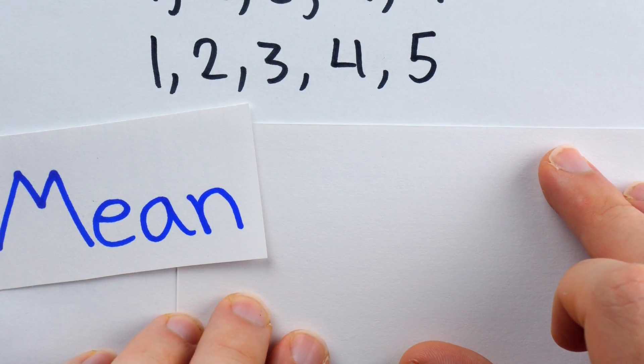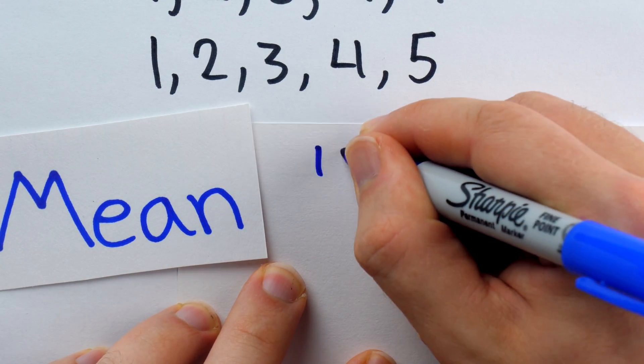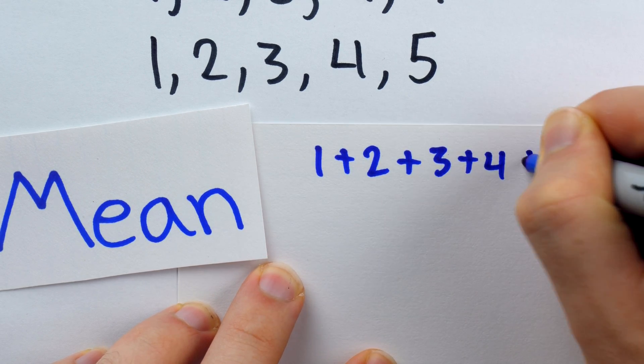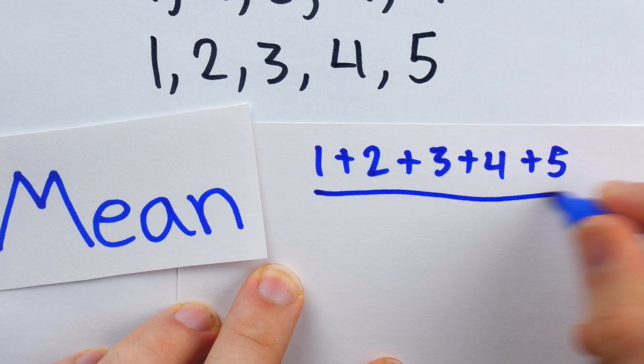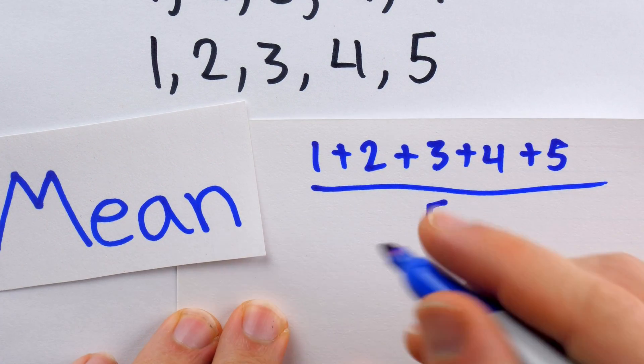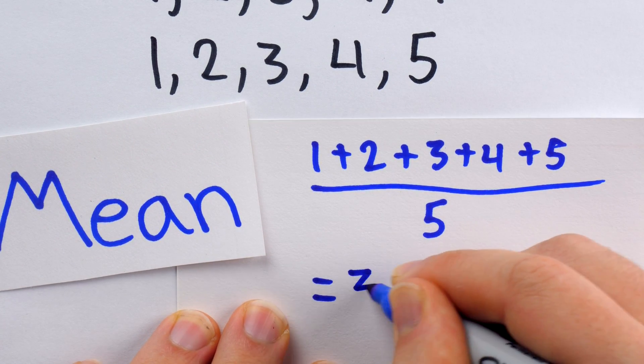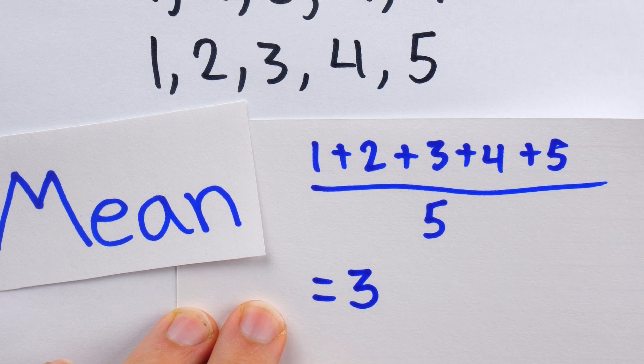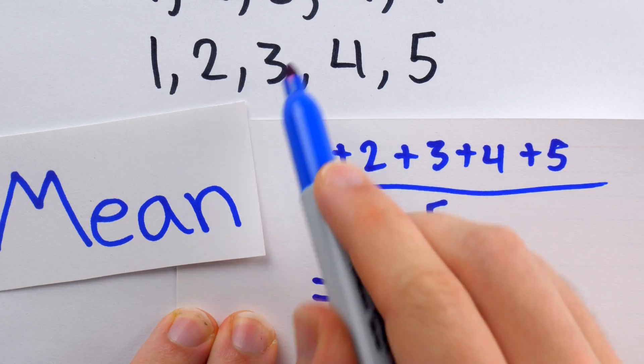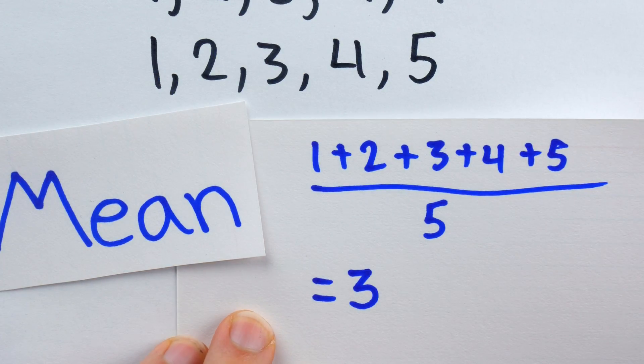Before, the mean was 2.8, but now the calculation is 1 plus 2 plus 3 plus 4 plus 5, adding up all the data points, and then dividing by 5, the total number of data points. This is 15 divided by 5, which is equal to 3. So the mean went from 2.8 to 3. It increased by a little bit. This still seems like a decent measure of the center, though.